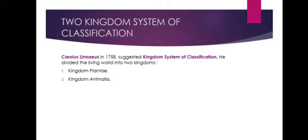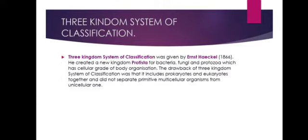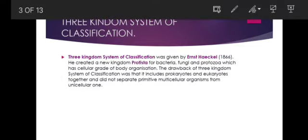Chlamydomonas can move and locomote and also has a photosensitive organelle like animals, but it also bears chlorophyll for photosynthesis like autotrophic plants. So it has a dual nature of both plant and animal. There are several other organisms at the cellular level that share this dual nature, making classification into either plants or animals problematic. This created the need for additional kingdoms, and so the two kingdom system was discarded.